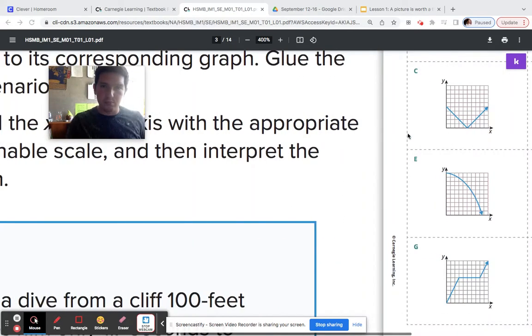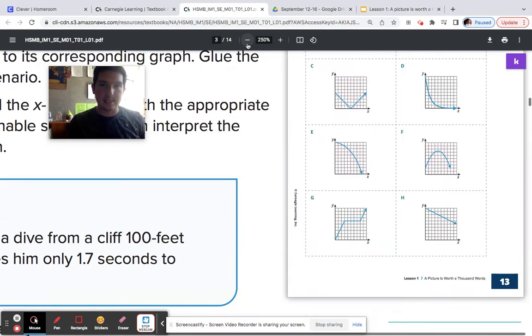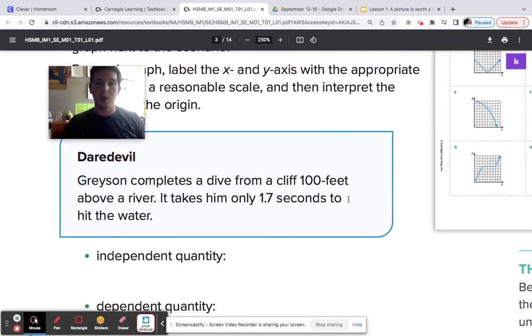That's what you're going to be labeling your axes as. So in this scenario, the feet above the river is Grayson's dependent variable. 1.7 seconds to hit the water is his independent variable.